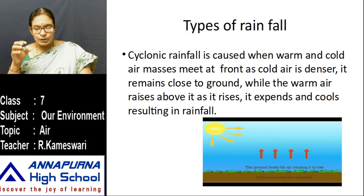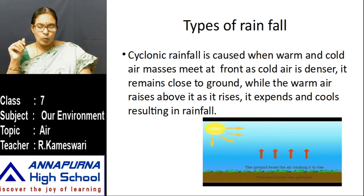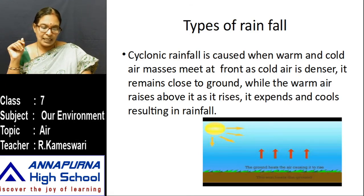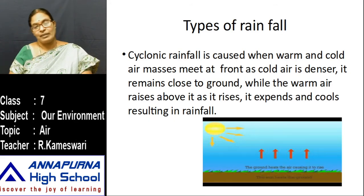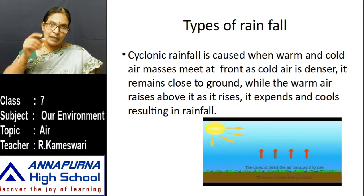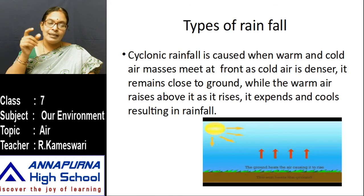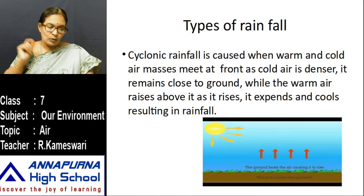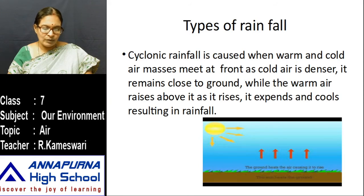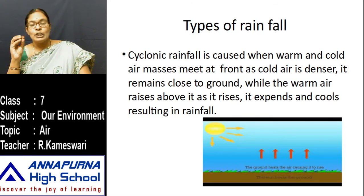Sometimes when you observe the sky, a white straight line appears — that is jet planes flying in the sky leaving a white trail behind them. The moisture from their engines condenses and we see trails of this condensed moisture for some time when there is no air movement to disturb it.